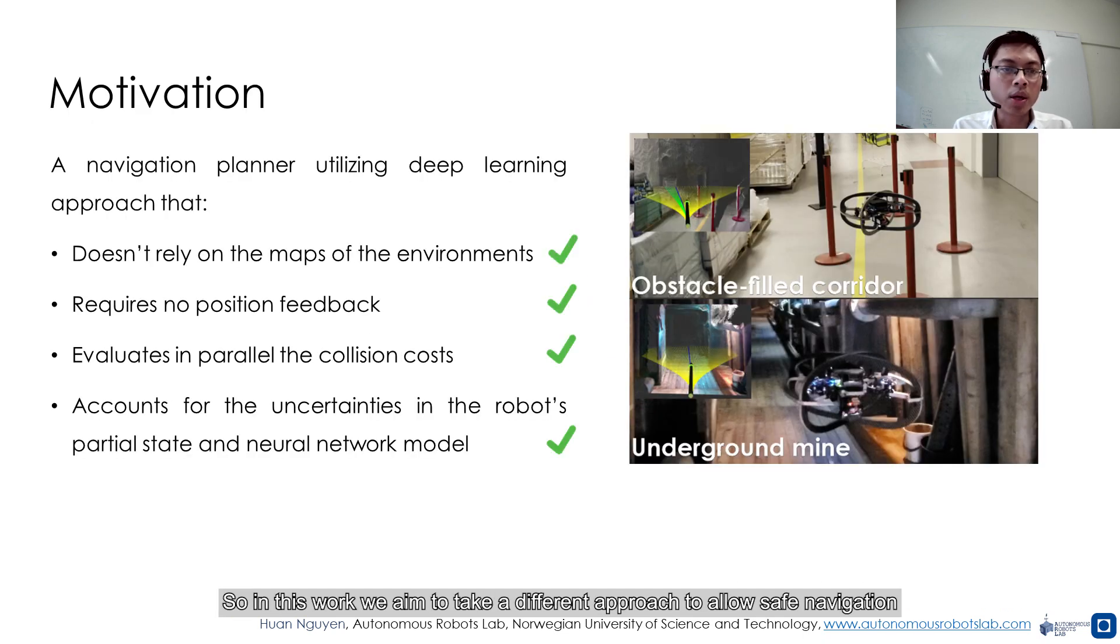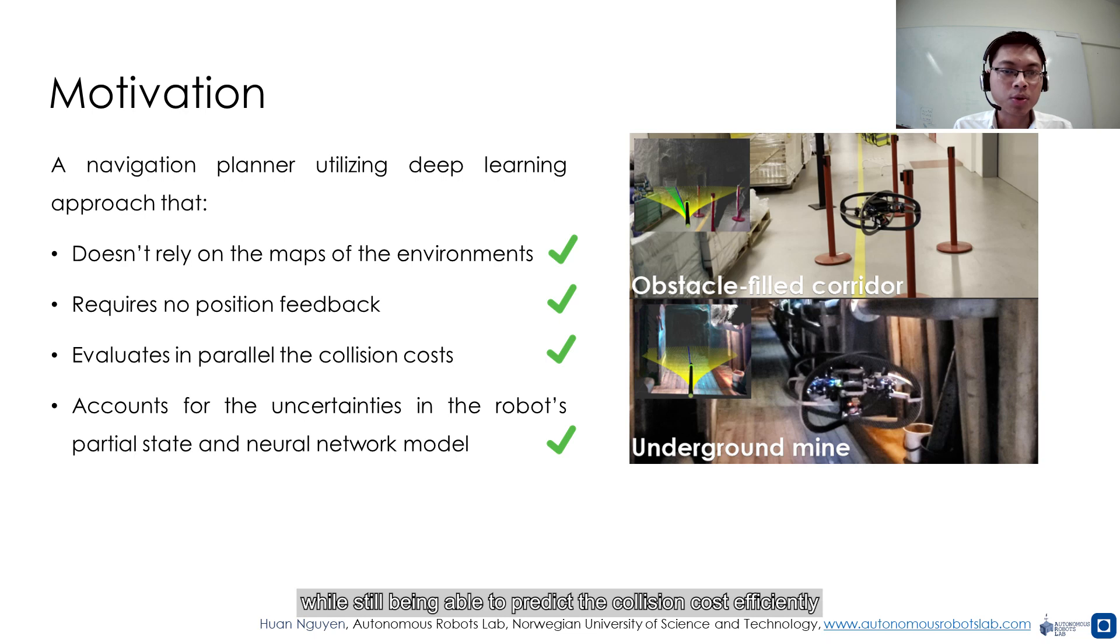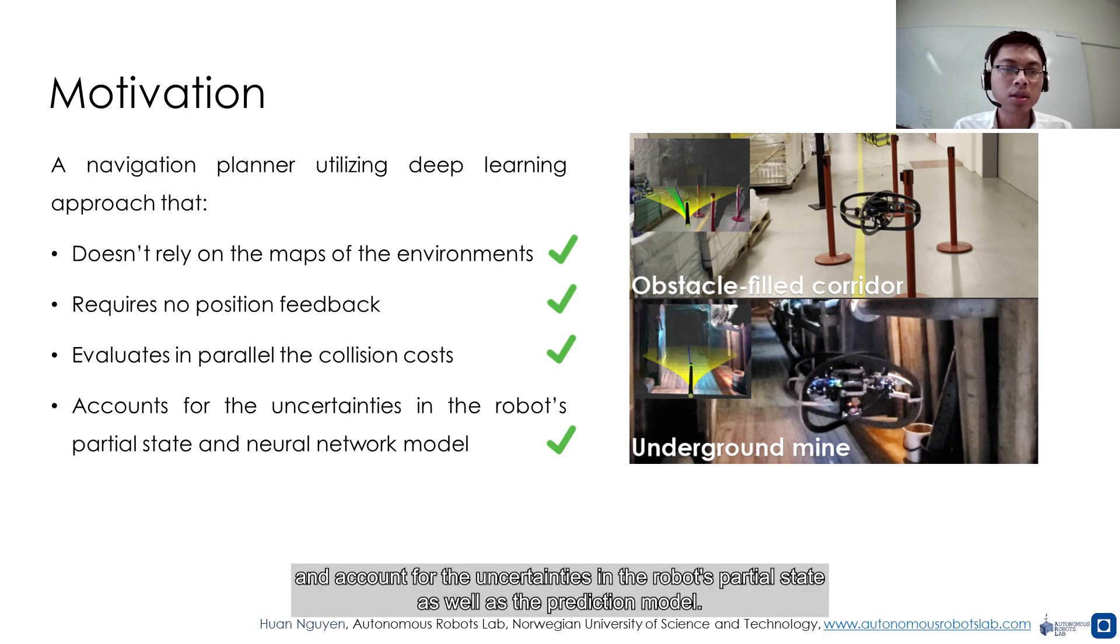In this work, we aim to take a different approach to allow safe navigation of aerial robots without relying on the maps of the environment and the position estimate of the robot, while still being able to predict the collision cost efficiently and account for the uncertainties in the robot's partial state as well as the prediction model.